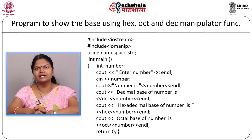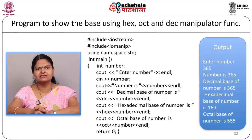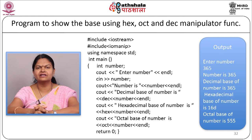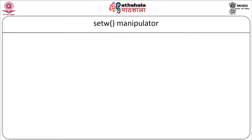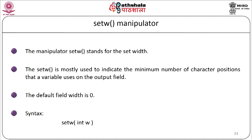The setw manipulator stands for set width. It is mostly used to indicate the minimum number of character positions a variable uses on the output field. The default field width is 0. The syntax is: setw(integer w). The setfill manipulator function is mainly used to denote dissimilar characters to fill the unused field width of a value. The syntax is: setfill(char f).